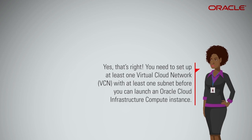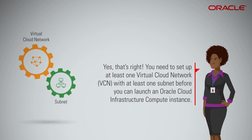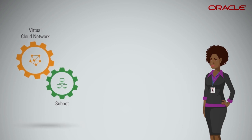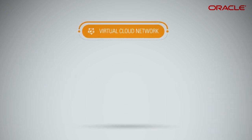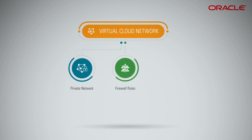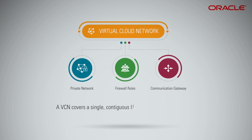Yes, that's right. You need to set up at least one virtual cloud network, VCN, with at least one subnet before you can launch an Oracle Cloud Infrastructure compute instance. When you launch an instance, you're required to provide the VCN and subnet details. In principle, the VCN is your virtual data center in the cloud. It's a private network that you set up in the Oracle data centers with firewall rules, routing policies, and specific types of communication gateways. A VCN covers a single contiguous IPv4 CIDR block of your choice.